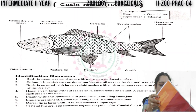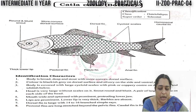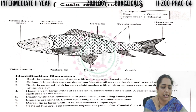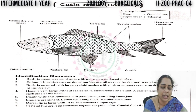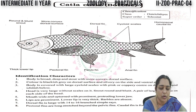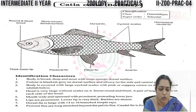Let us see the continuation of our topic. We are in the spotters, and the next specimen is Katla katla bocche. We should mention the classification also. Class Osteichthyes, superclass Teleostei.